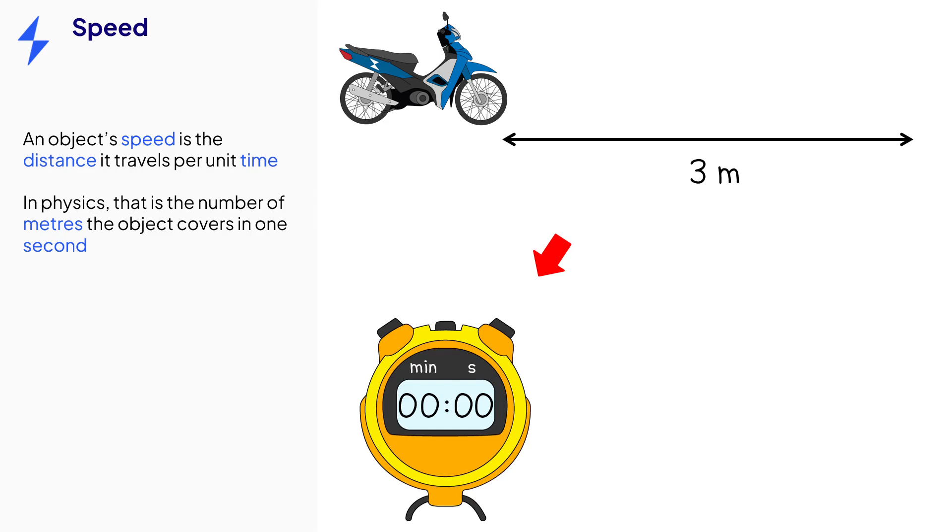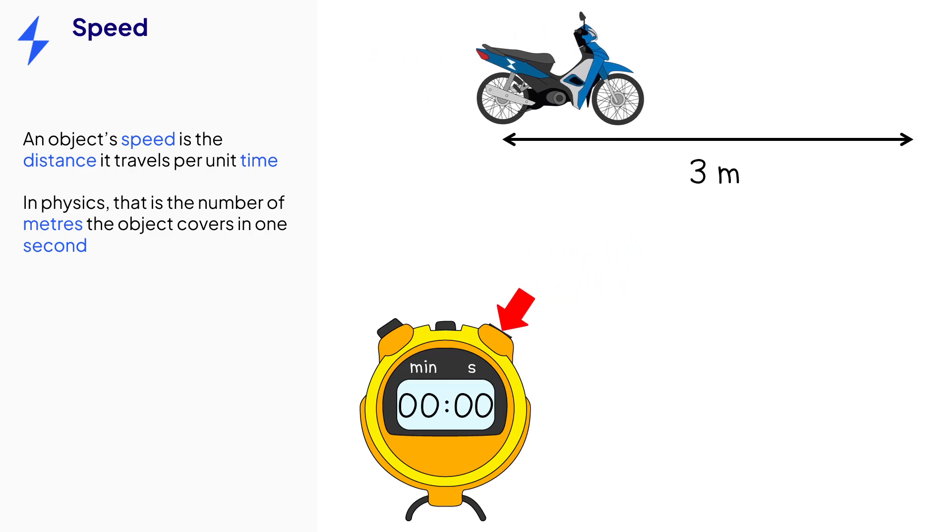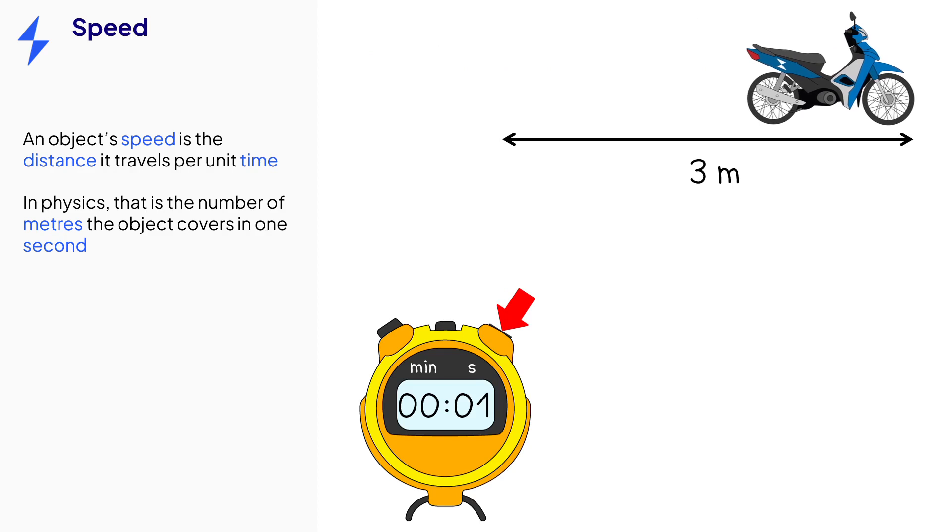For example, let's look at this bike. The bike travels three meters in one second. We describe speed with units of meters per second, so we can say the bike has a speed of three meters per second.